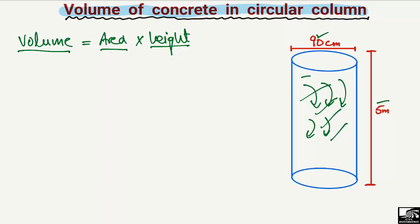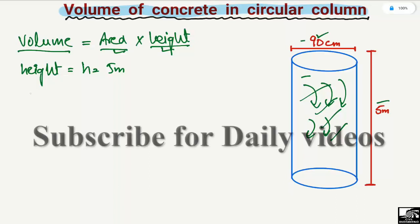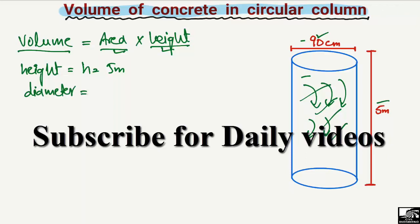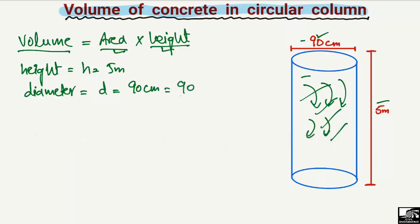To find out the volume of concrete in this column, we need the area and the height. The given dimensions are: height H = 5 meters, and diameter = 90 centimeters. We divide 90 by 100 to convert it to meters, giving us 0.9 meters, so that both units are in meters.